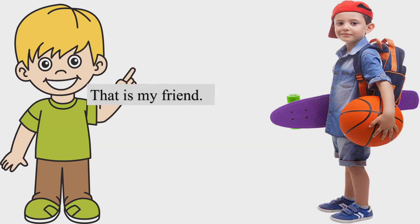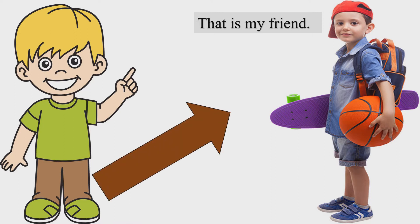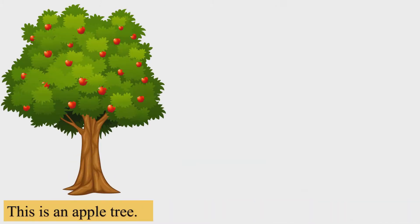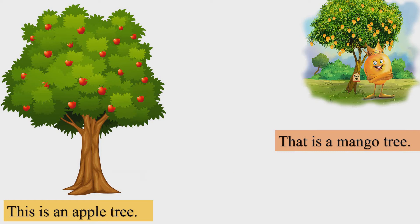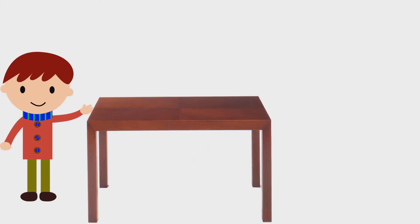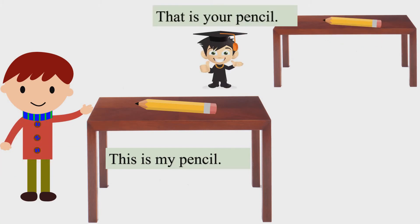That is my friend. Let's take some more examples. This is an apple tree. That is a mango tree. We used 'this' for the tree that is near, and 'that' for the tree that is far. Near means close by, far means at a distance. This is my pencil. That is your pencil.